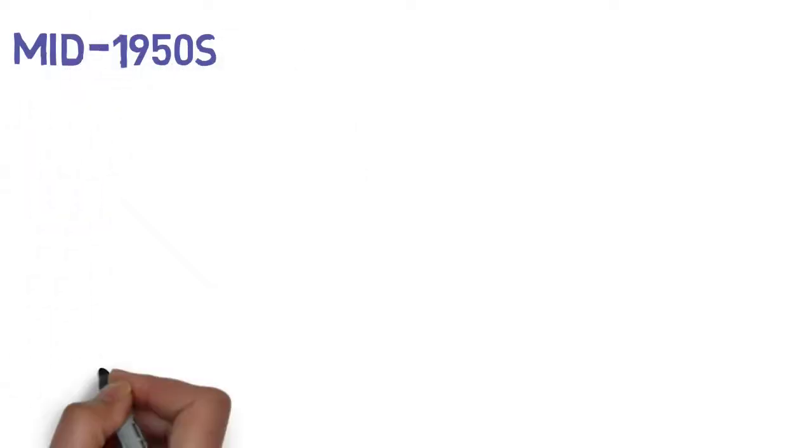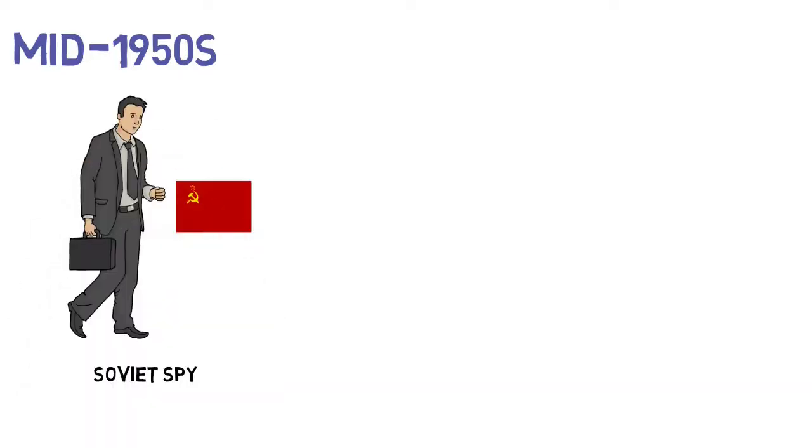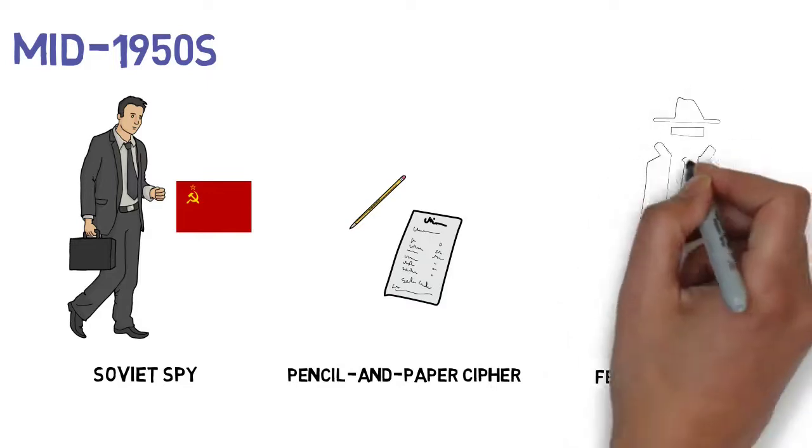In the mid-1950s, a Soviet spy codenamed Viktor pulled off an incredible feat. He utilized a pencil and paper cipher that not even the FBI was able to crack. This cipher was known as the VIC cipher.